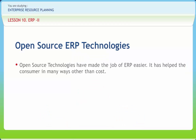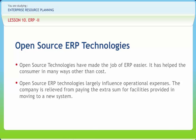Open source technologies have made the job of ERP easier and have helped the consumer in many ways beyond cost. Lots of companies are increasingly using them. The price tag of open source ERP technologies is literally free of cost — all the user has to do is download the software and install it. An unbelievable fact is that even the source code comes free. Open source ERP technologies largely influence operational expenses. The company is relieved from paying extra for moving to a new system, and need not incur additional expenditures for renewal and purchase of licenses as components are added to the framework.